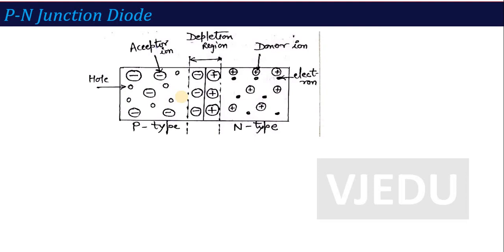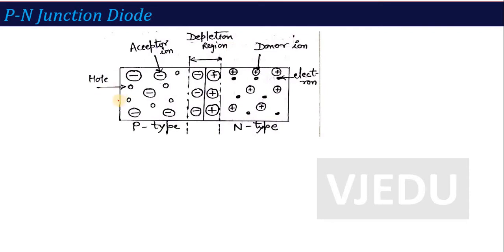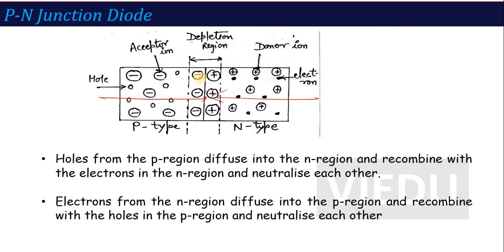As the name defines, p-n junction — what is happening? If I join a p-type semiconductor with an n-type semiconductor, it will form a p-n junction diode. Now, inside p-type, the majority carriers are holes, and p-type is made of acceptor impurity.